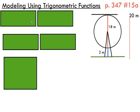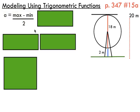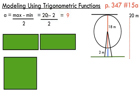Let's start with the amplitude. You'll recall that amplitude is found by taking the maximum and subtracting the minimum. Now that we know what our maximum is, we can take that 20 and subtract our minimum, which is going to be our two meters above the ground. If we divide that by two, we're gonna get nine, which is our amplitude for our sine function.